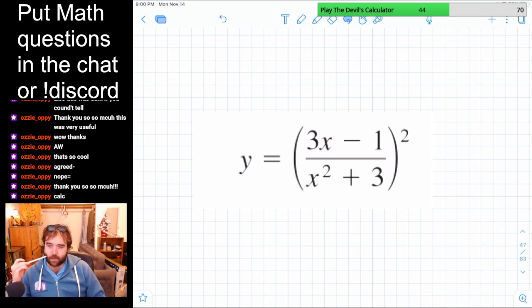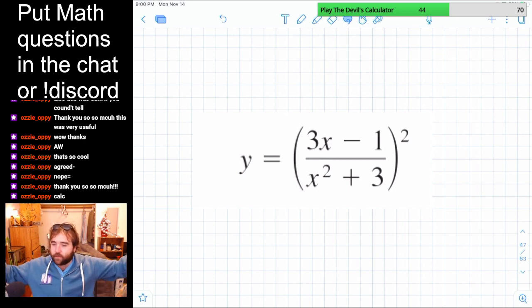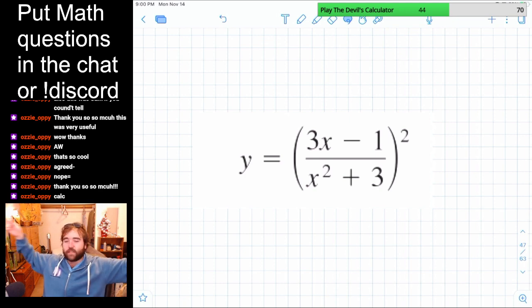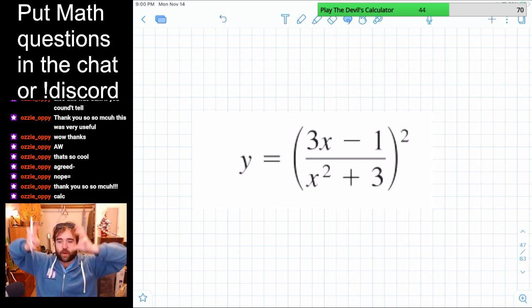So now we're taking this derivative. This derivative looks complicated, but you just got to break it down to what it is. So you've got your outside function, you've got your squared. So we're talking inside-outside functions, you already know we're using chain rule. So we've got our outside function that's the squared, and we've got our inside function that's that fraction.